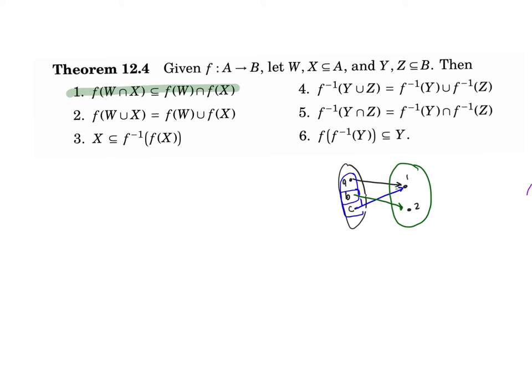I want to show that the image of W intersect X is a subset of the image of W intersect the image of X. So let's see how we would prove that. I'm trying to prove this subset. So what I should do is, let some element x be in f(W ∩ X).